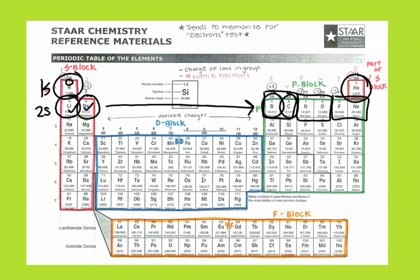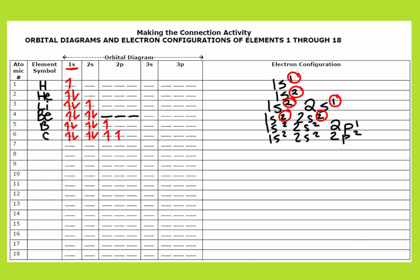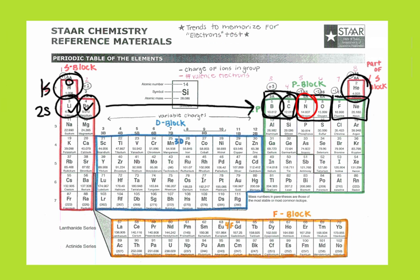The next one is nitrogen. Same sort of thing — its configuration is 1s2, 2s2, 2p3, one extra electron. So I'm going to go up, down in the 1s; up, down in the 2s; and up, up, up across the three 2p orbitals. I should have a total of 2 plus 2 is 4, plus 3 is 7 electrons. So 7 arrows are drawn for nitrogen.